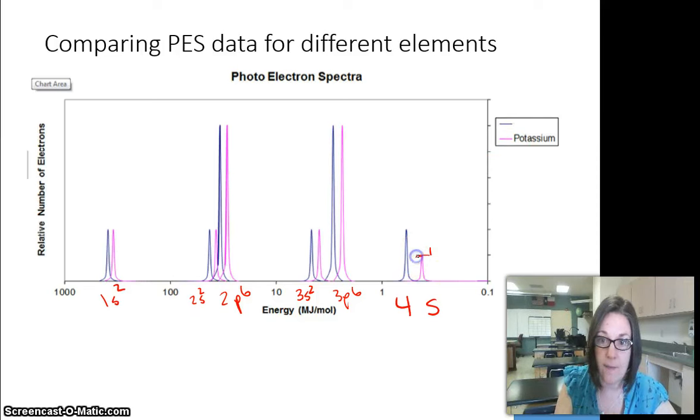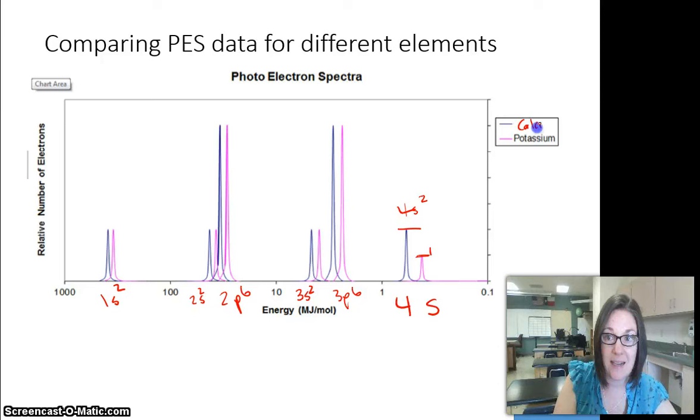Potassium just had one, and that peak is shorter. This one has two electrons. It's a taller peak, which means this ends at 4S2. So that tells us that the blue line is going to represent calcium.